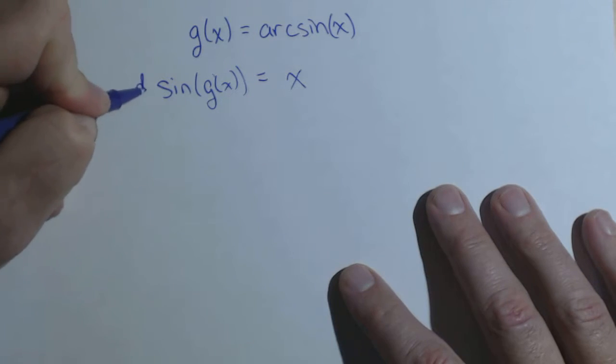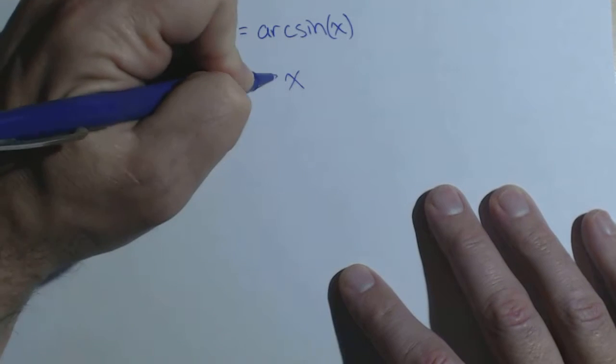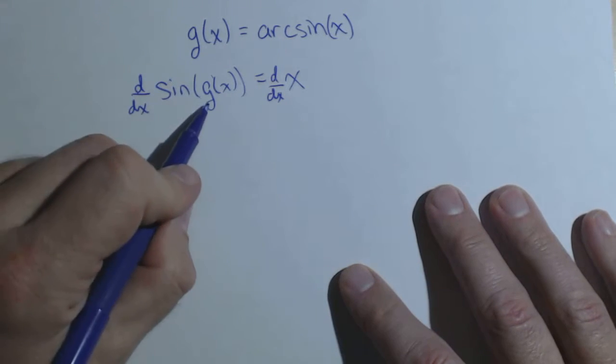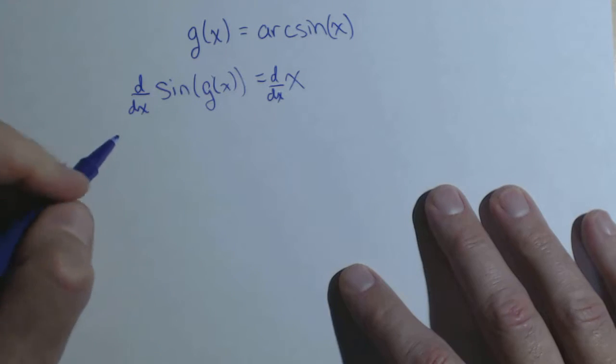Now I'm going to take the derivative of both sides with respect to x. Over here I've got a chain rule: inside function, outside function.